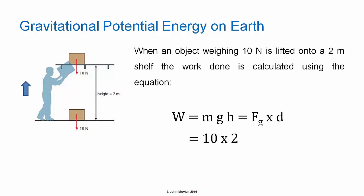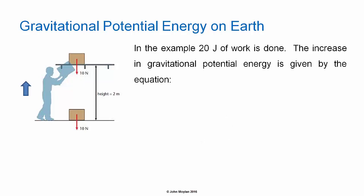In this case, the box weighs 10 newtons and it is lifted 2 meters, so the work done to lift the box onto a 2 meter high shelf is 20 joules. The increase in Gravitational Potential Energy of the box can be calculated using the equation delta E subscript p, where E subscript p is Gravitational Potential Energy, so the change in Gravitational Potential Energy equals mgh.